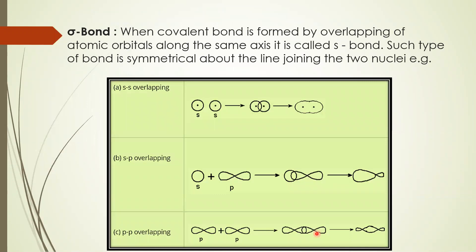A sigma bond is a covalent bond which is formed by overlapping of atomic orbitals along the same axis. It is known as a sigma bond, or also referred to as an S bond. Such type of bond is symmetrical about the line joining the two nuclei. Sigma bond can involve S-S overlapping, S-P overlapping, and P-P overlapping as well. But the overlapping is always done on the same axis — head-to-head. No side overlapping takes place in sigma bond.